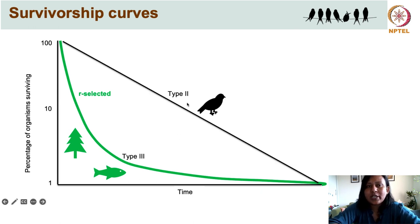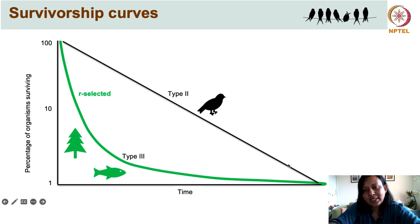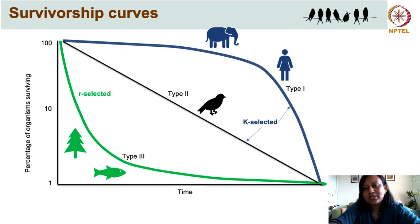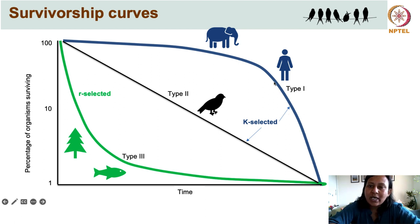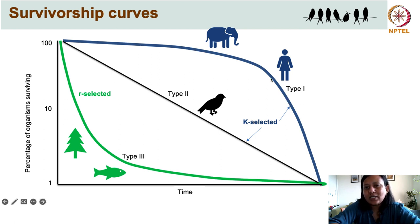Species showing a type 2 survivorship curve have a constant rate of mortality throughout their lifetime, and birds belong to this category. Larger-bodied animals — typically mammals like humans and elephants — show the type 1 survivorship curve, characterized by very low mortality early on, which stays stable for a long time, before increasing drastically after a certain age. Both type 1 and type 2 survivorship curves can be shown by K-selected species.